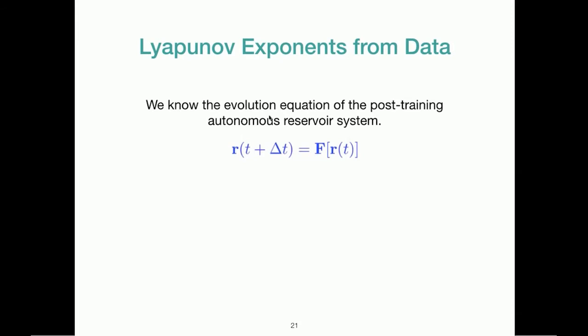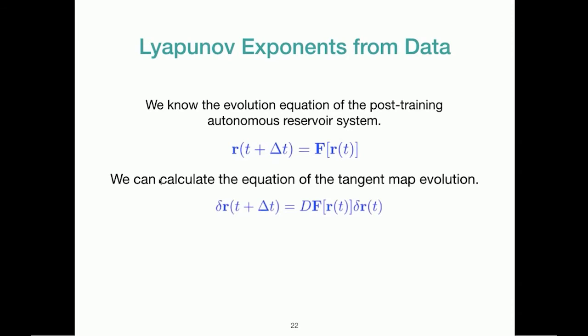So here, I'll point out that we know the evolution equation of the post-training autonomous reservoir system, because we built it. We decided what our reservoir is, we decided the weights and everything. We do not know the equations of the true system from where the data is coming, but we do know everything about our reservoir.